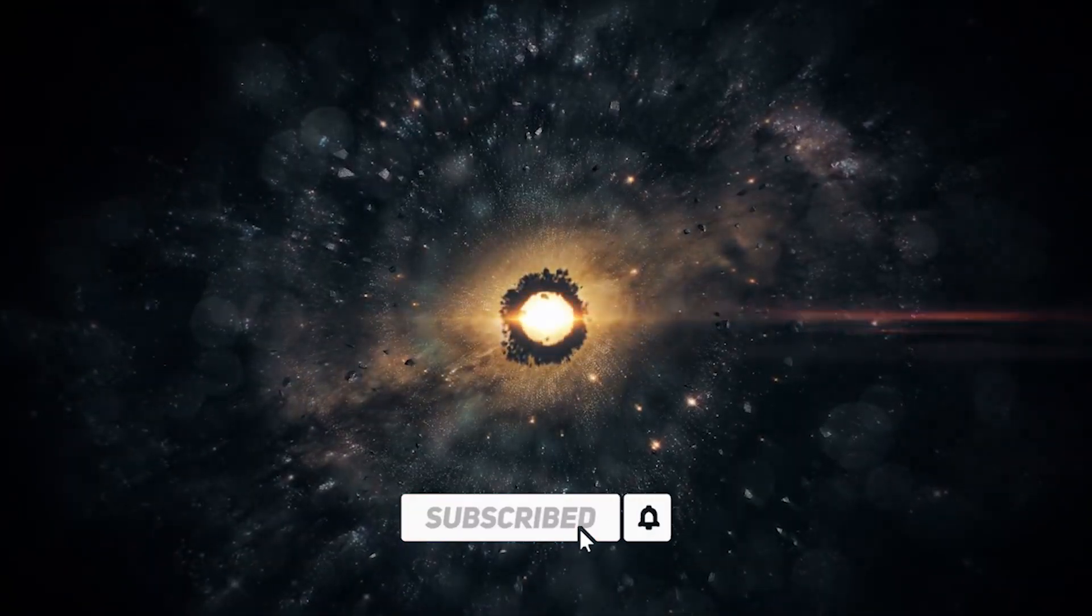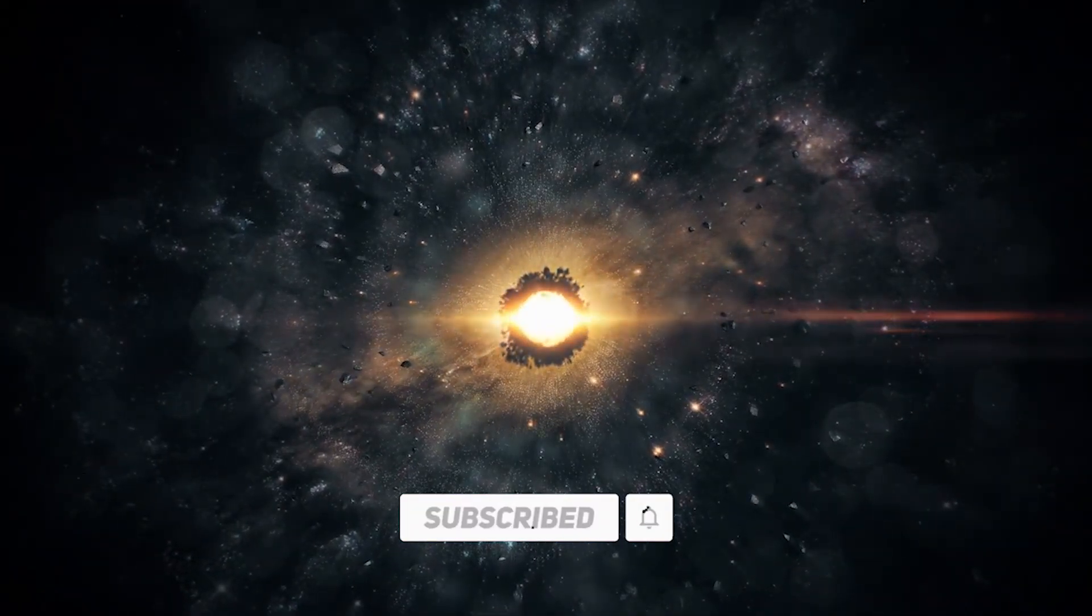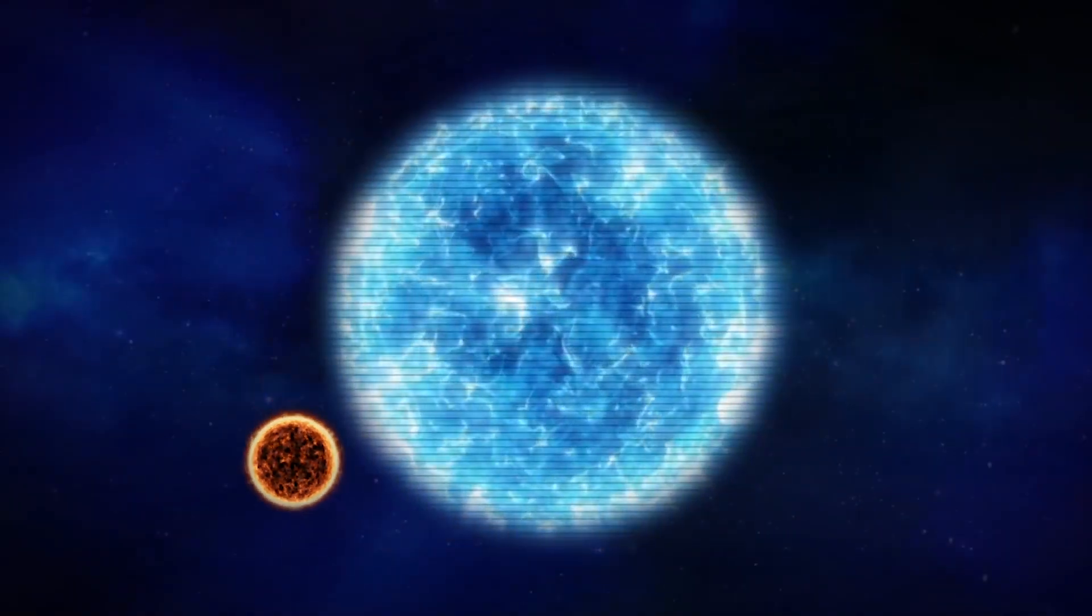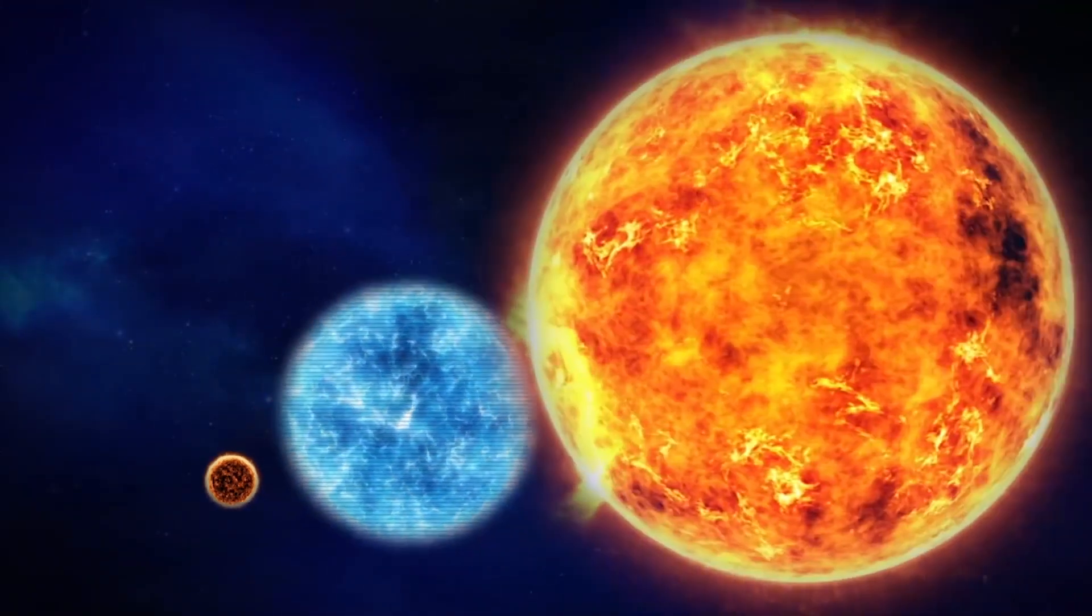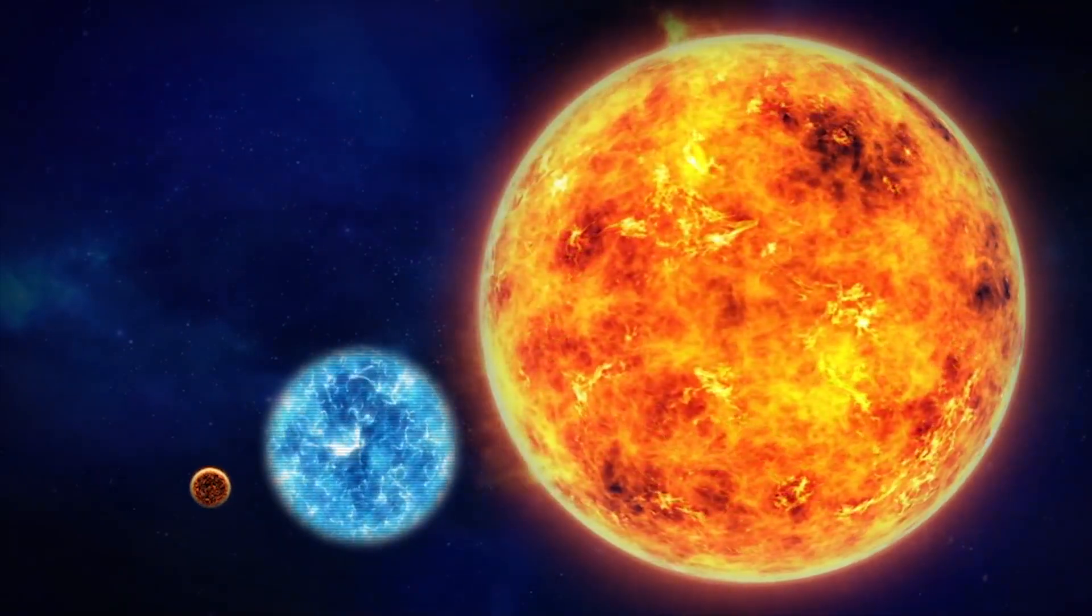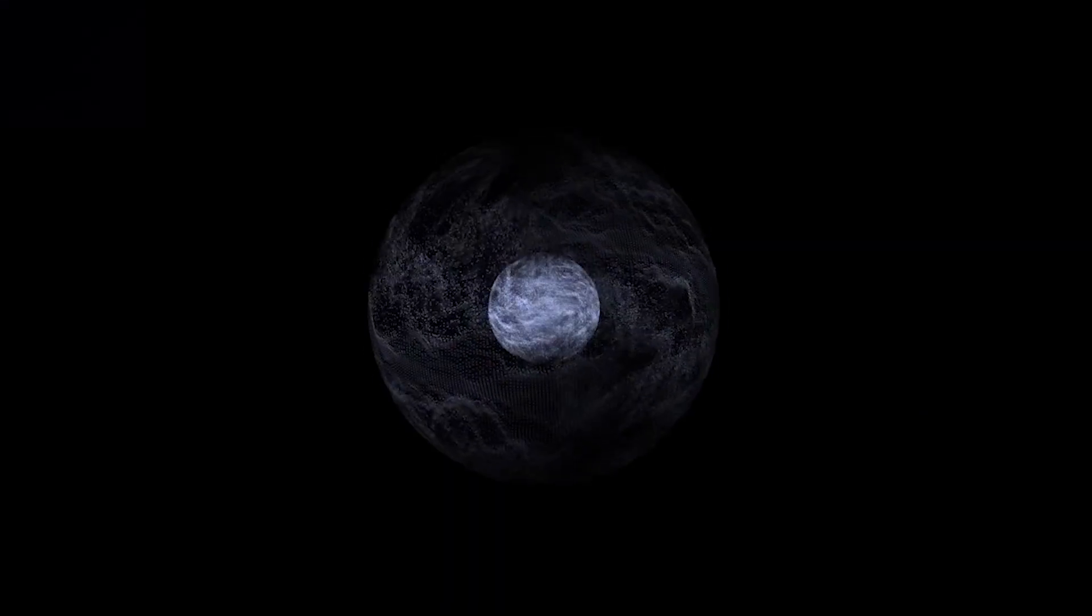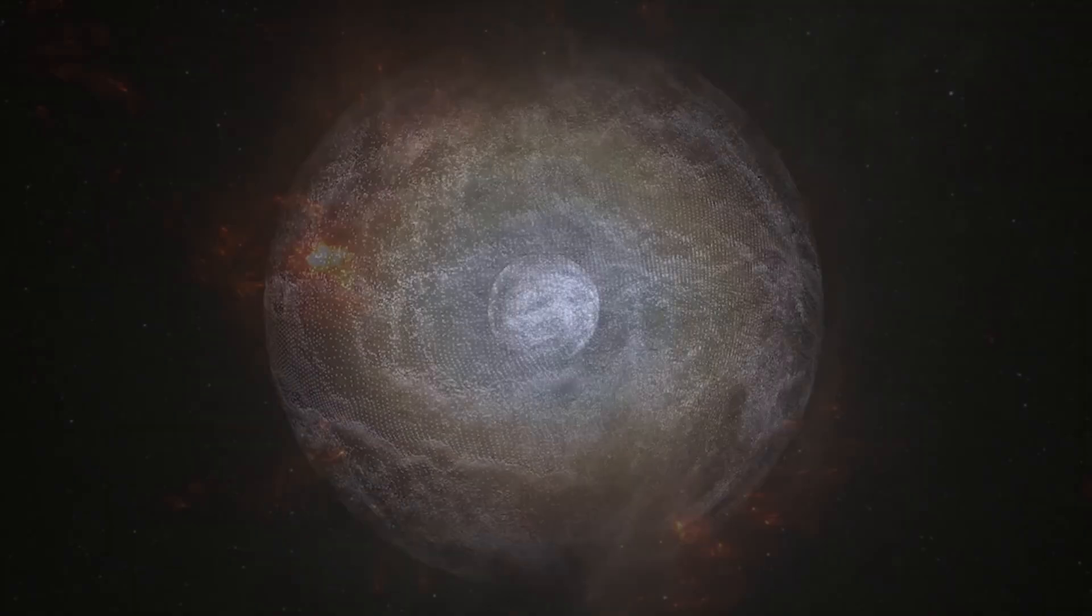To help you visualize its immense size, let's consider this. If we were to replace our sun with Stevenson 2-18, it would extend so far that it would engulf everything within the orbit of Jupiter. Can you imagine the sheer magnitude of such a star? It's truly mind-boggling.